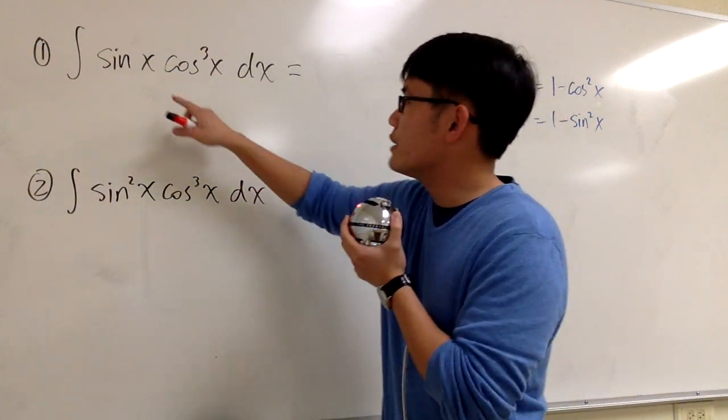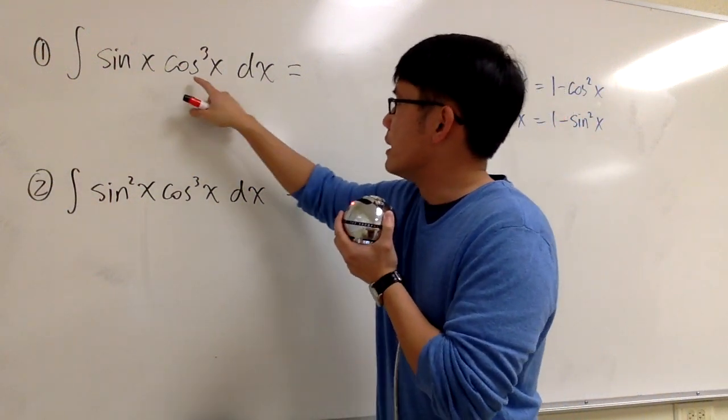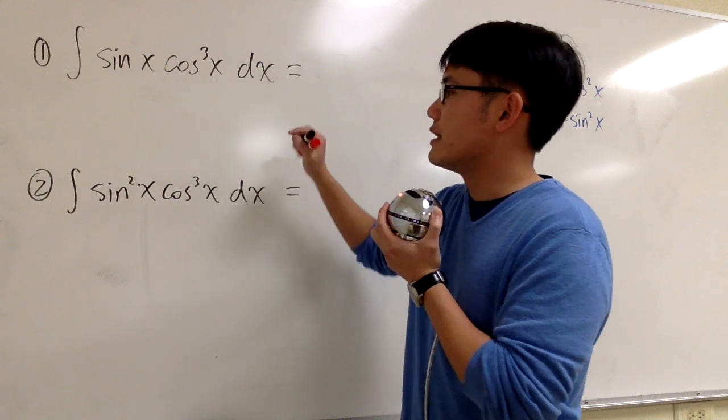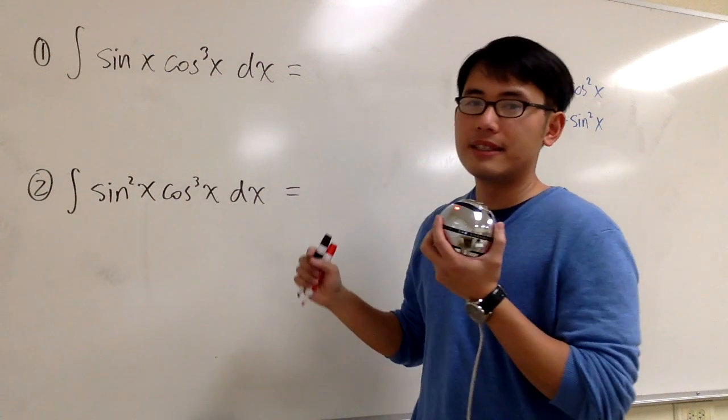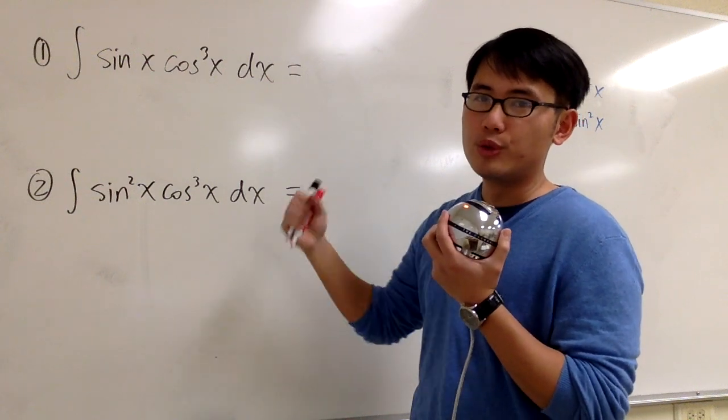Let's go over these two integrals. The first one, integral of sine x times cosine to the third power x dx. The second one, integral of sine squared x times cosine to the third power x dx. These two questions, which one's easier?